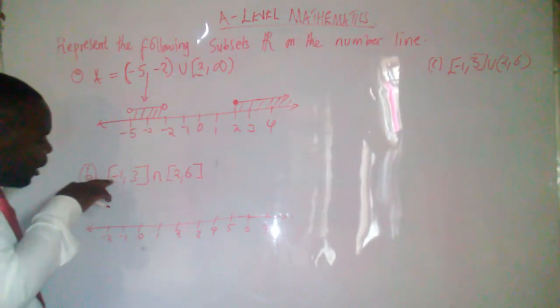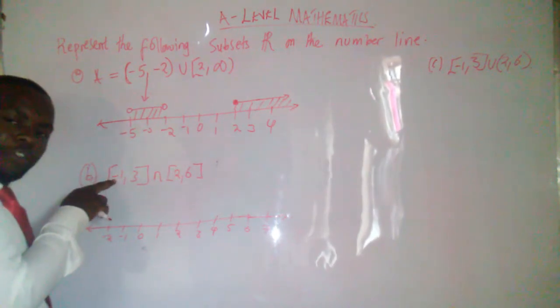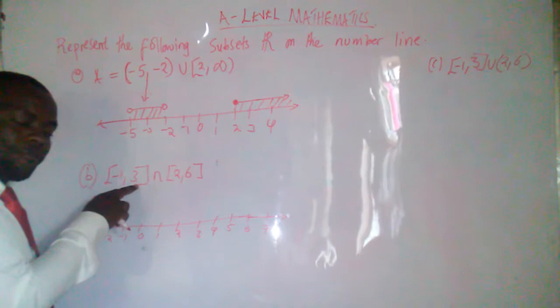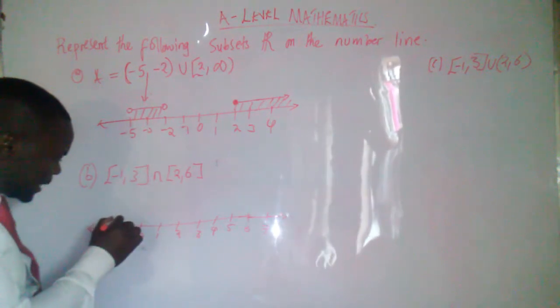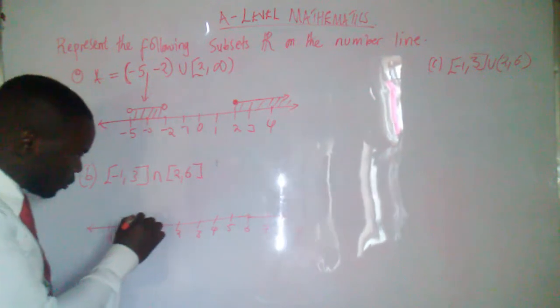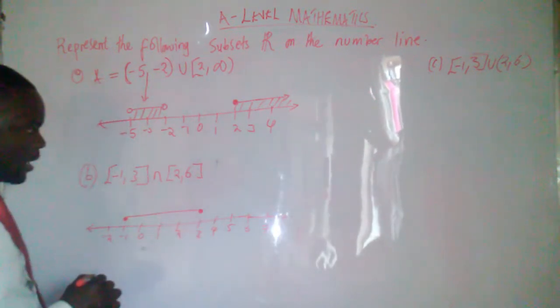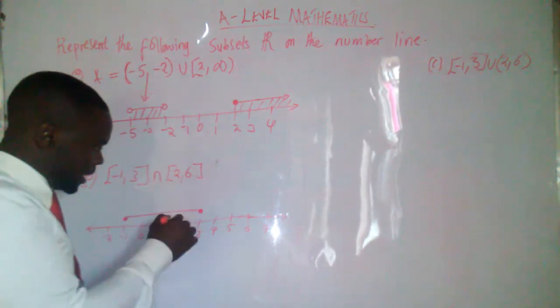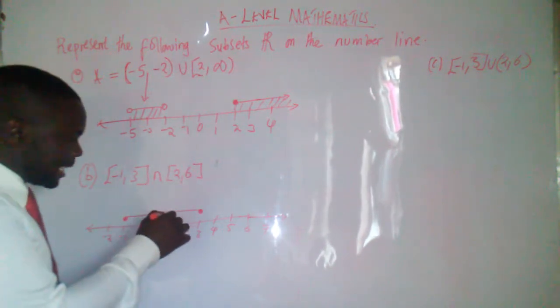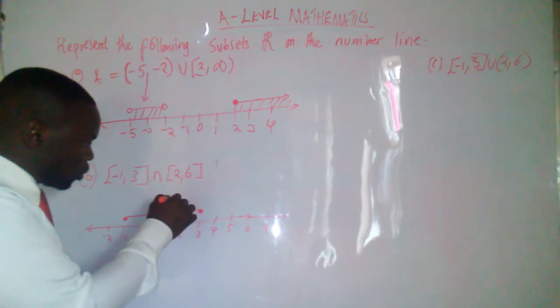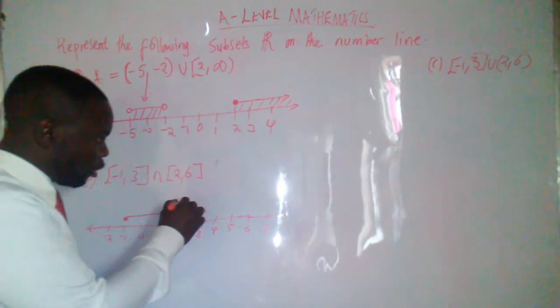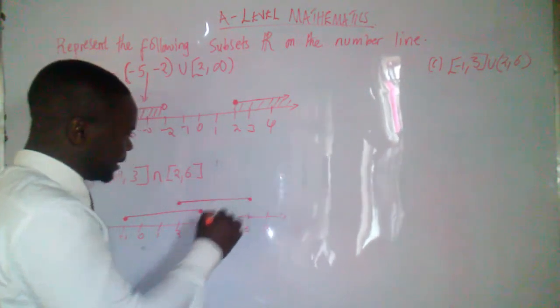So we have got a close interval of negative 1 and a close interval of 3. So a close interval with a dot, negative 1, the close interval of positive 3. Thereafter, we have got the open interval of 2, the open interval of 6.